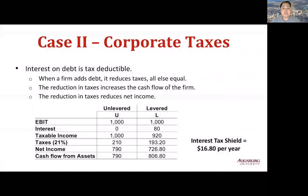In Case 1 the explanation is simple, but we all know we live in a world with taxes. So let's assume we have taxes but still no bankruptcy. In Case 2 we pay taxes. Increasing leverage may change the cash flow because interest on debt is tax deductible. When a firm adds debt, it reduces taxes, all else equal, and the reduction in taxes increases the cash flow of the firm.